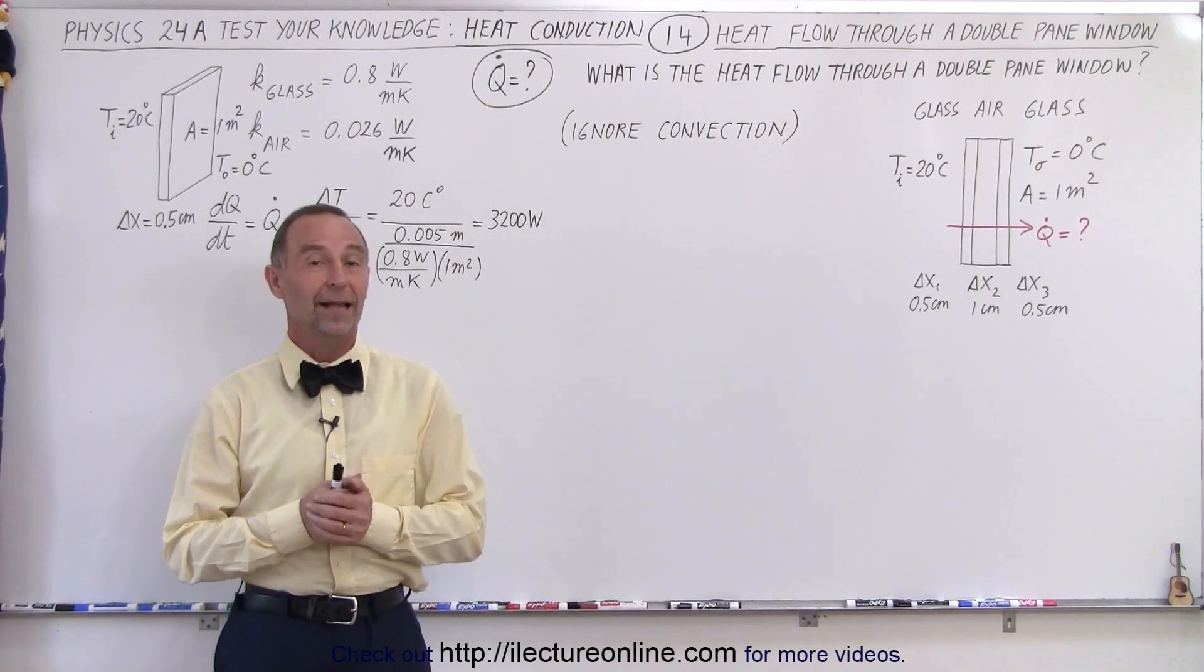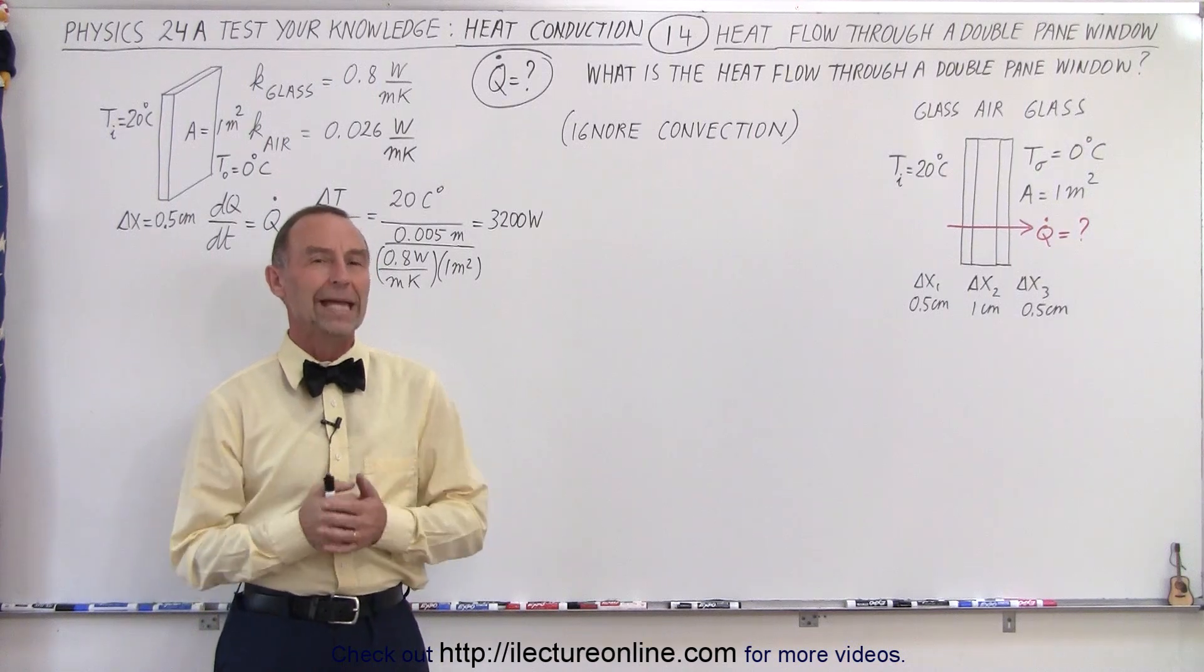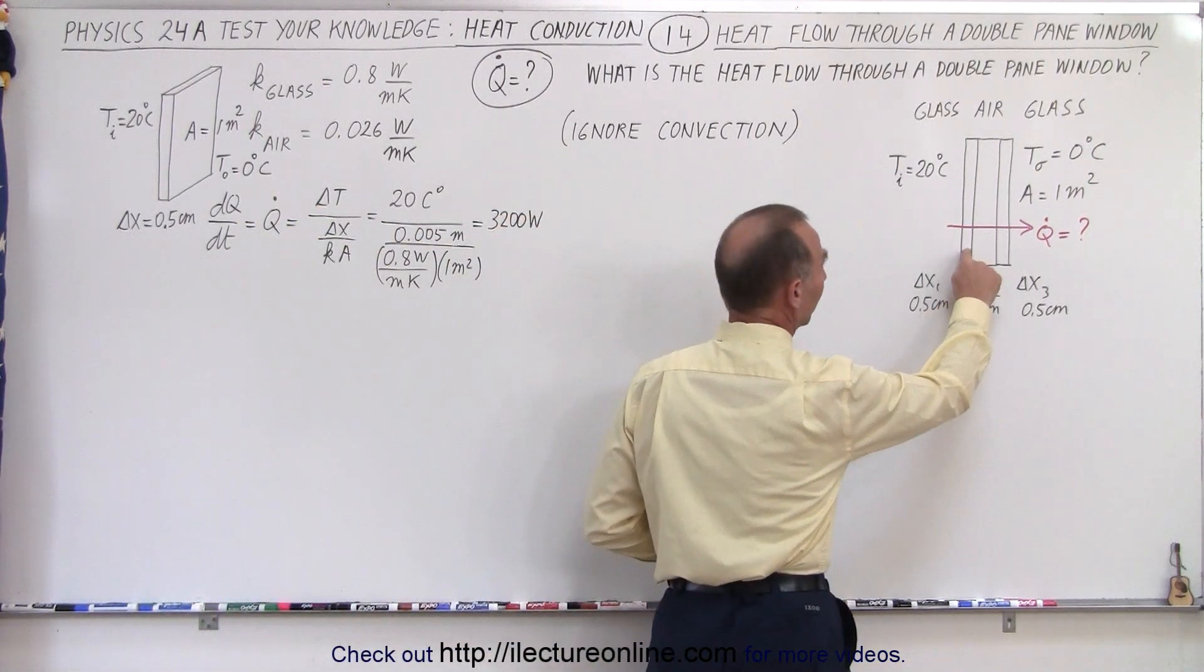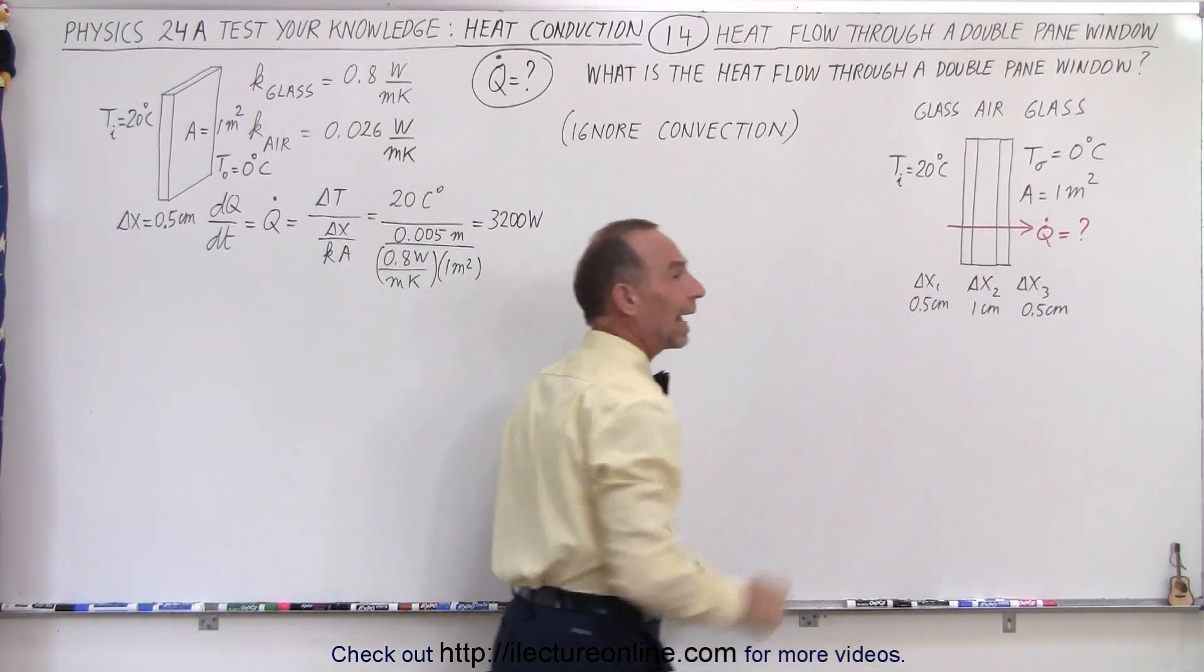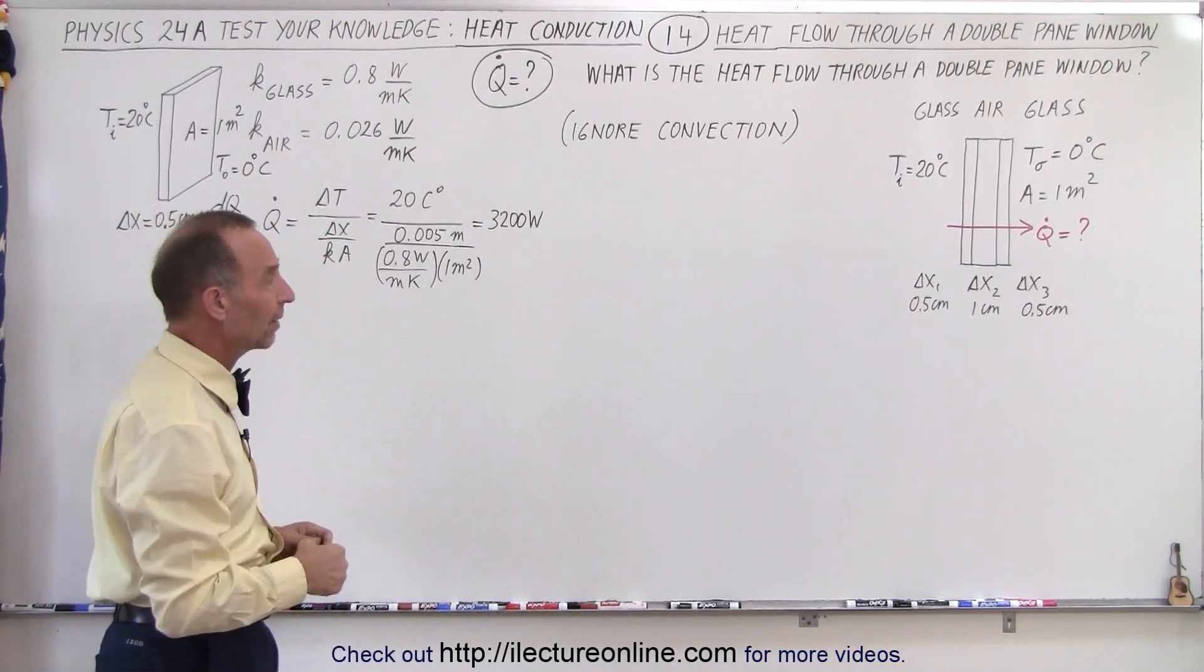Welcome to Y Lecturer Online. Now we're ready to calculate the heat flow through a double pane window. A double pane window is a window that has a pane of glass on one side, a pane of glass on the other side, and has some gas in between. It can be air, typically, or sometimes they fill it with another gas.